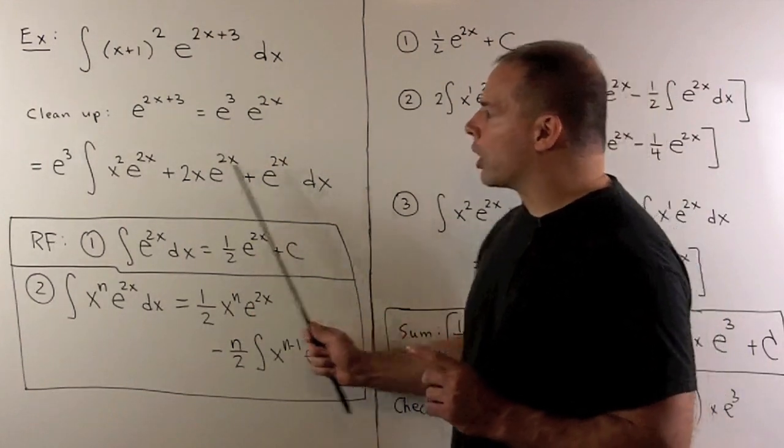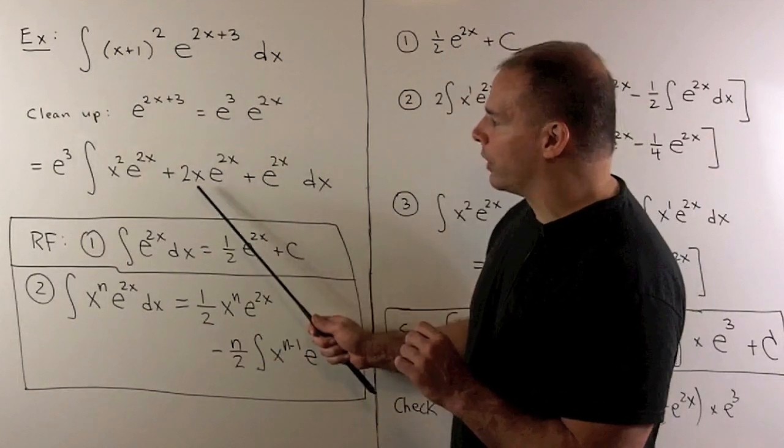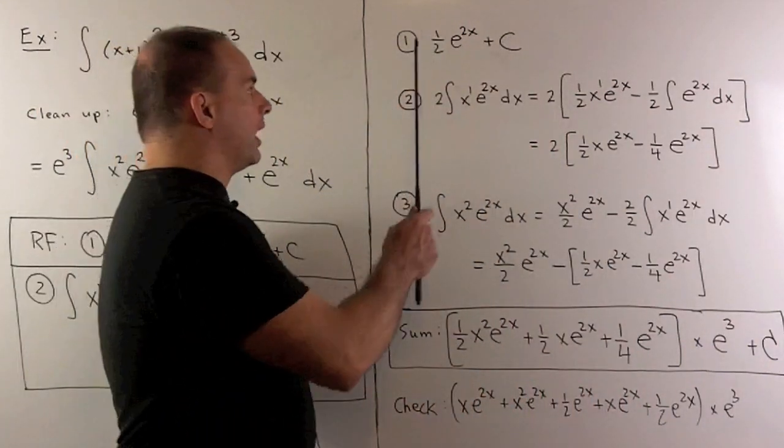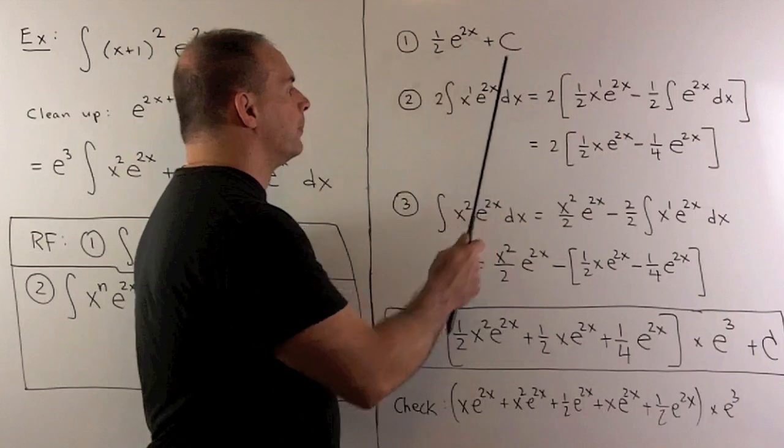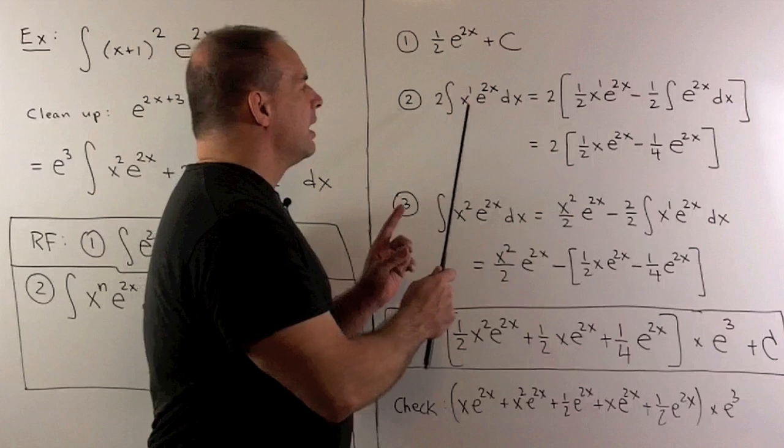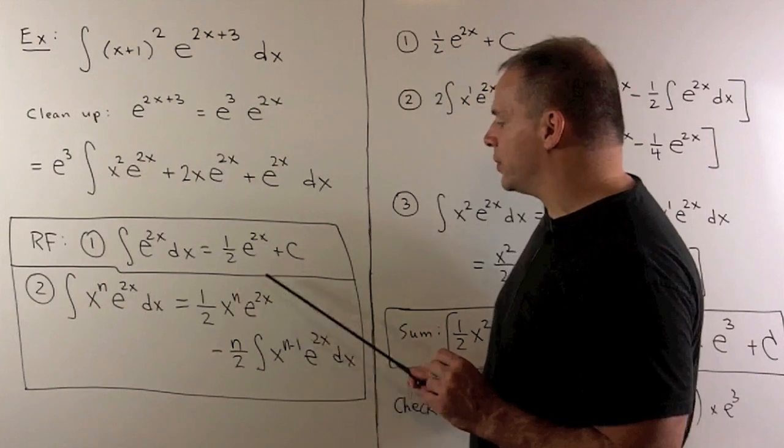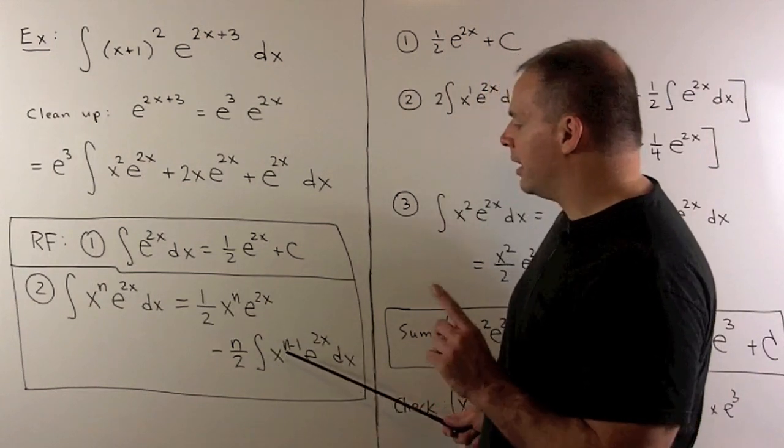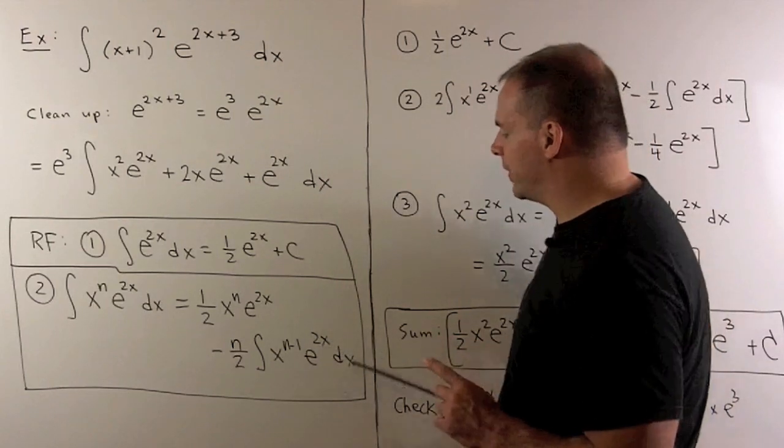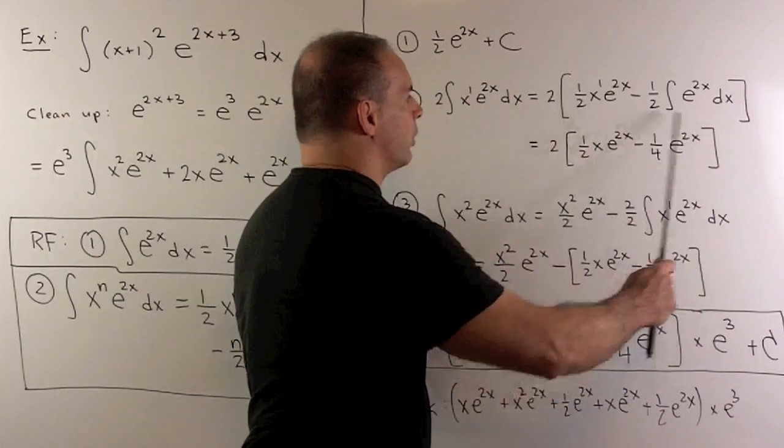And now, I can start applying our reduction formula to each of our terms. So, we'll start on the right and work our way left, since the answer for each term on the right is going to apply to the one on the left. For e to the 2x, we just get a 1 half e to the 2x plus c. For the 2x e to the 2x, I'll pull the 2 out. Then, we just apply our formula with n equal to 1. So, we'll have 1 half x e to the 2x minus 1 half. Then, we have indefinite integral e to the 2x dx. That we just figured out. So, we're going to get this, which I can rewrite like this.